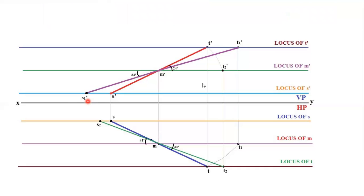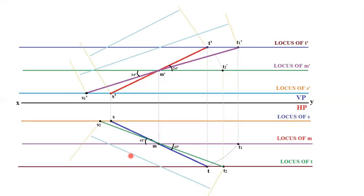Now measure the angle between the front view line and the true length for both top and bottom, and write whatever answer you are getting. After completing the diagram, we will proceed to dimensioning. For dimensioning: the extension line should be exactly perpendicular to the line being dimensioned, and the dimensioning line should be parallel to it.